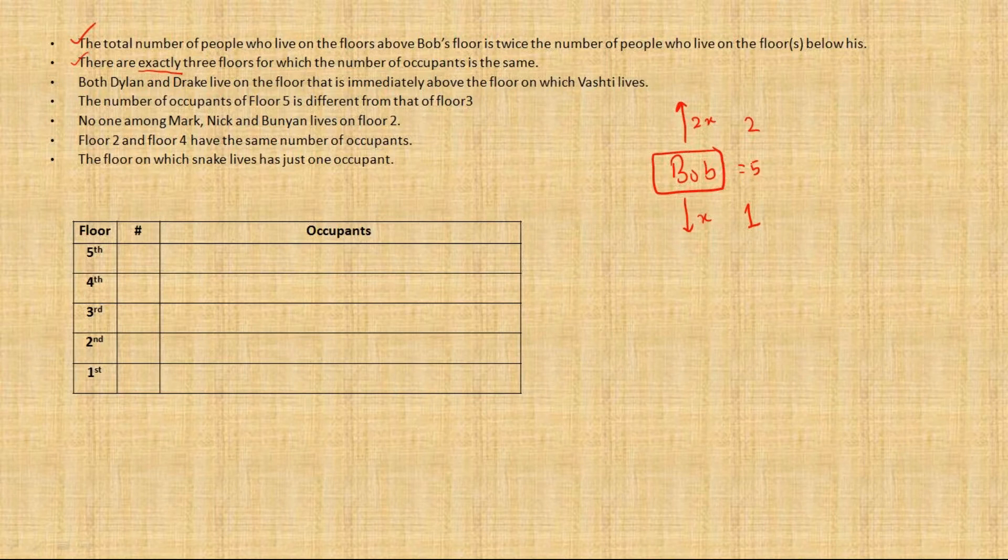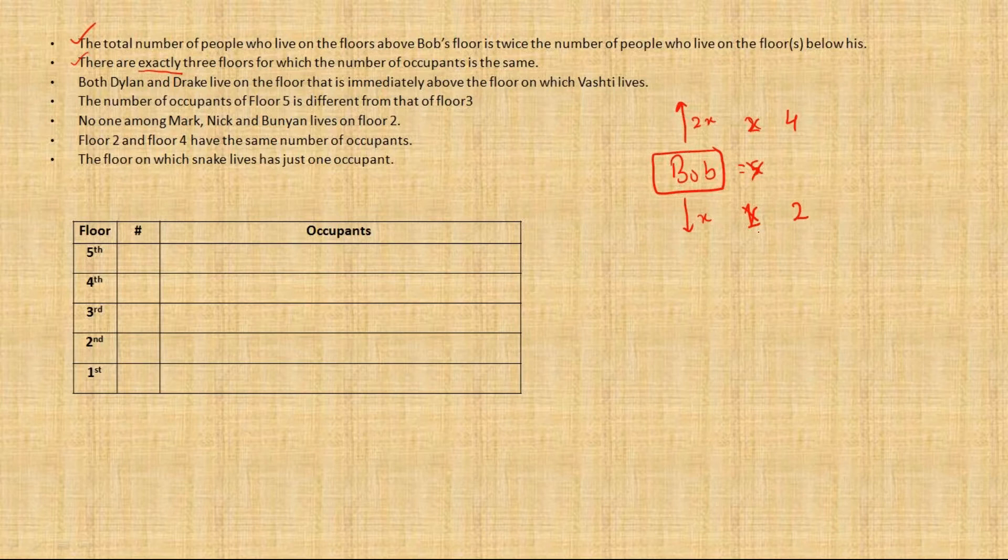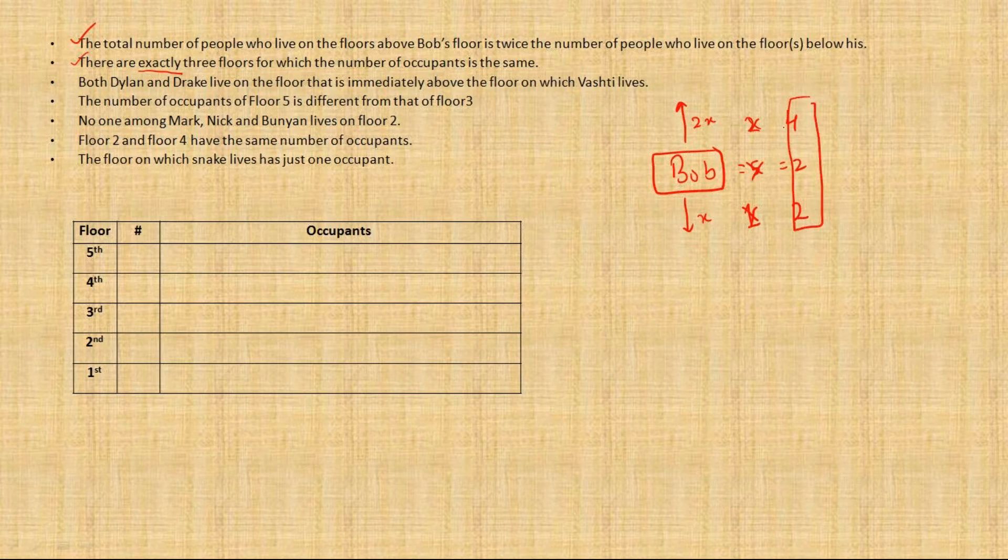Okay, now Bob's floor could have 5 people, but imagine on one floor there are 5 people and all the remaining 4 floors there are only 3 people. That means there will be at least one floor on which there is no one, which is not to be done by the question. The question says that on every floor at least one person lives. Okay, then the only possibility is 4. The number of people living below Bob's floors is 2 and that above Bob's floors is 4, which means that on Bob's floors there are 2 people, so that makes 8. So Bob is living with somebody, one more person.